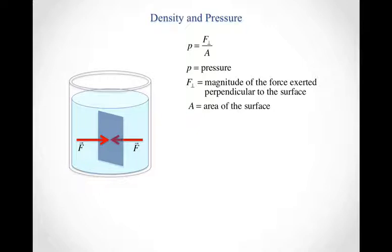So the pressure is equal to F perpendicular, so it's the magnitude of the force that's exerted on the surface that's perpendicular to the surface, divided by the area of the surface. Notice that even though we're talking about forces, and forces are obviously vectors, pressure itself is a scalar. And so I'm simply interested in the magnitude of the force that's perpendicular to the surface.